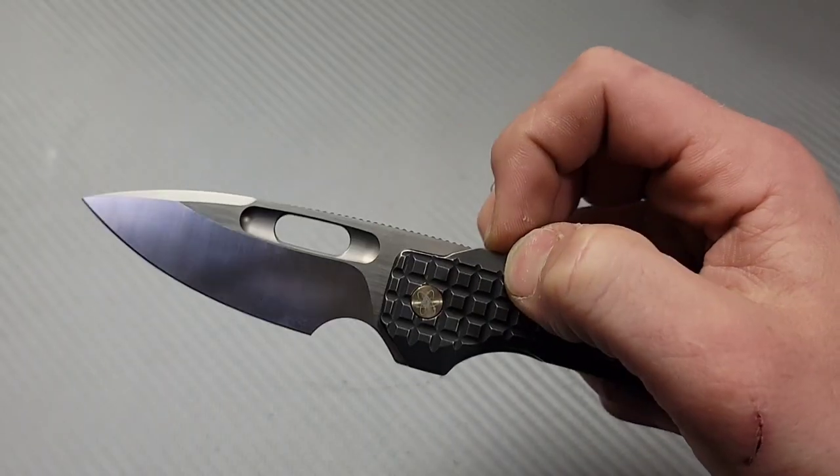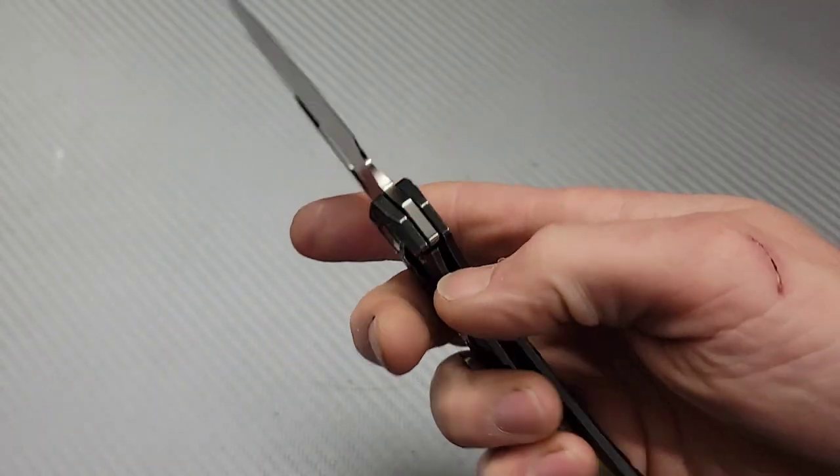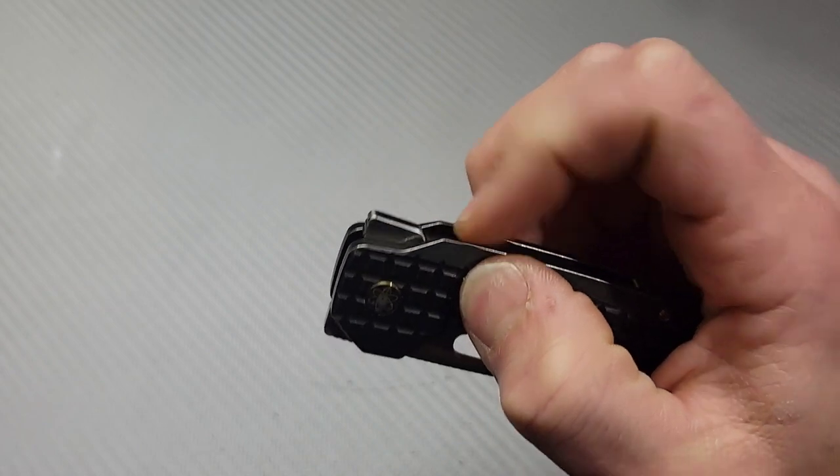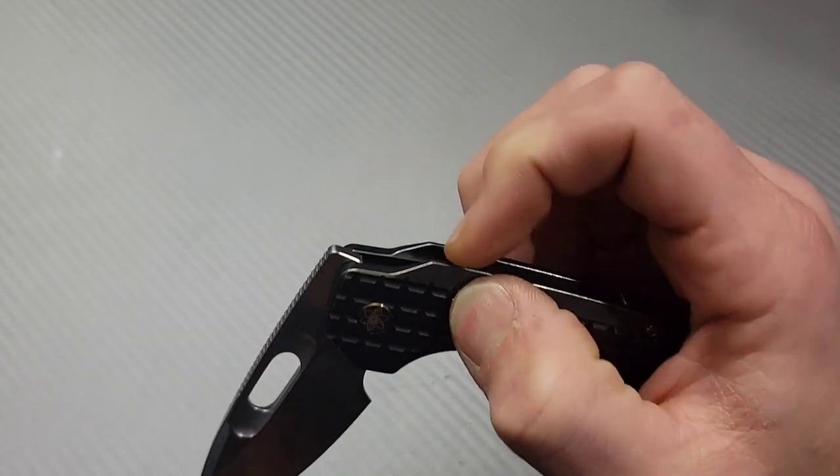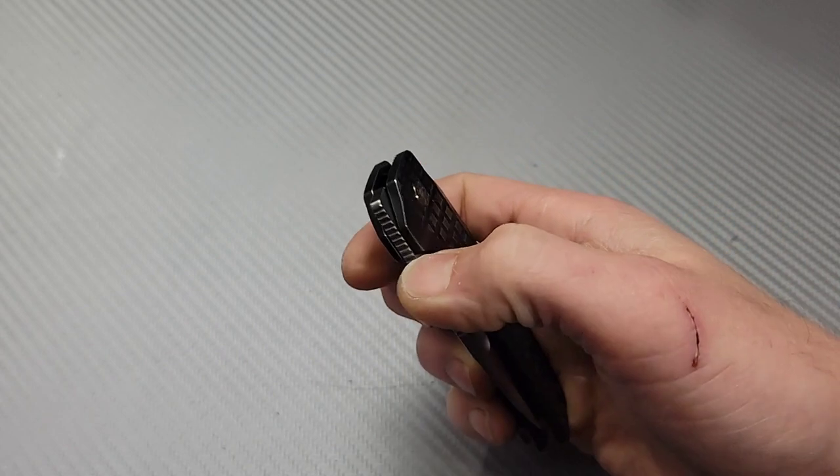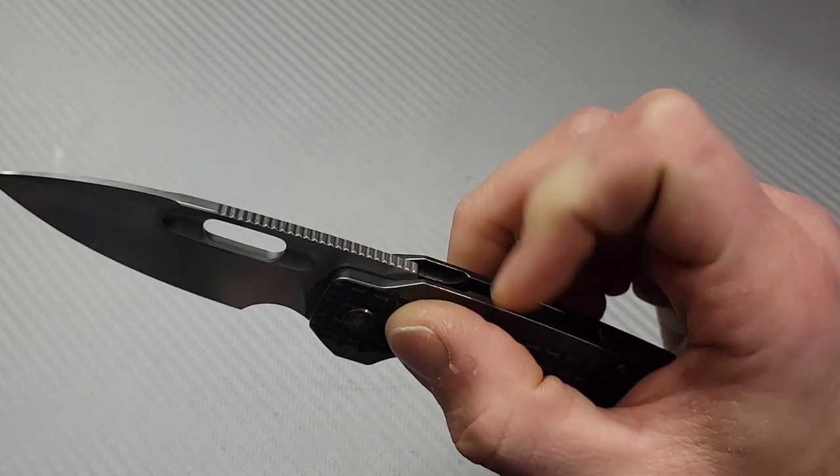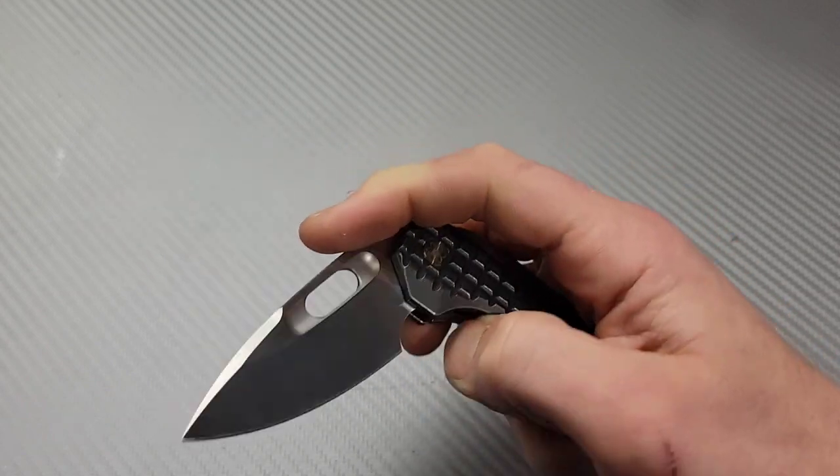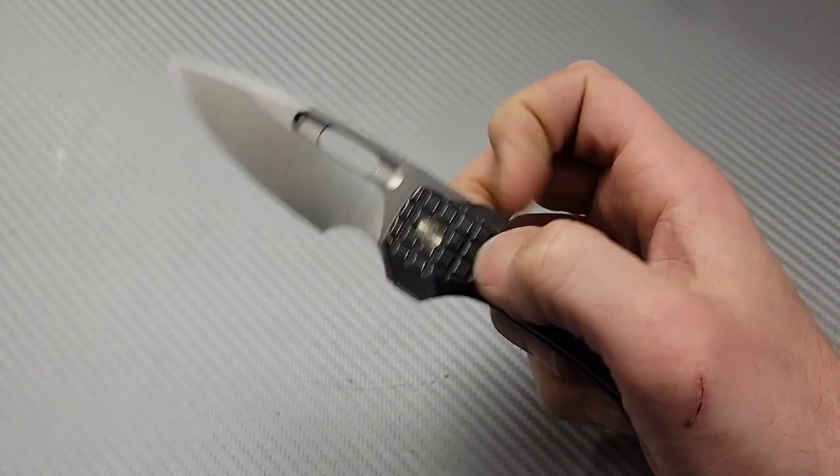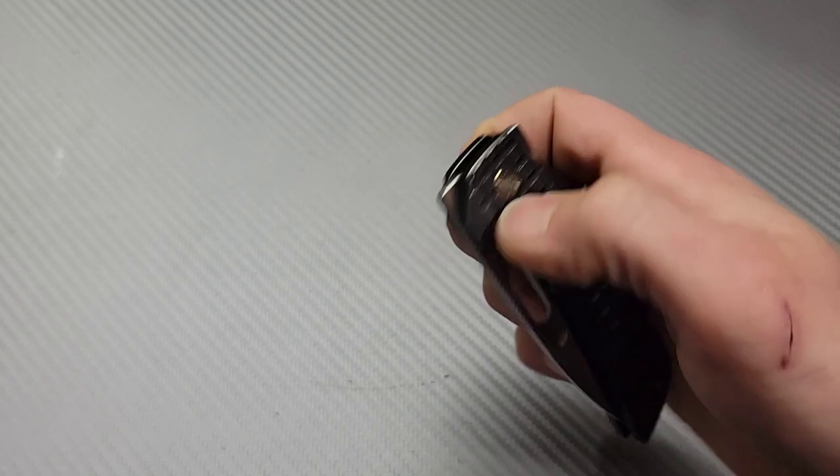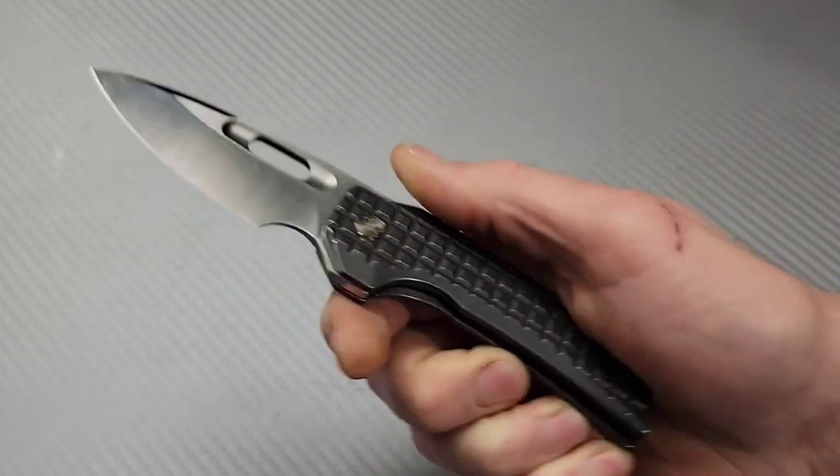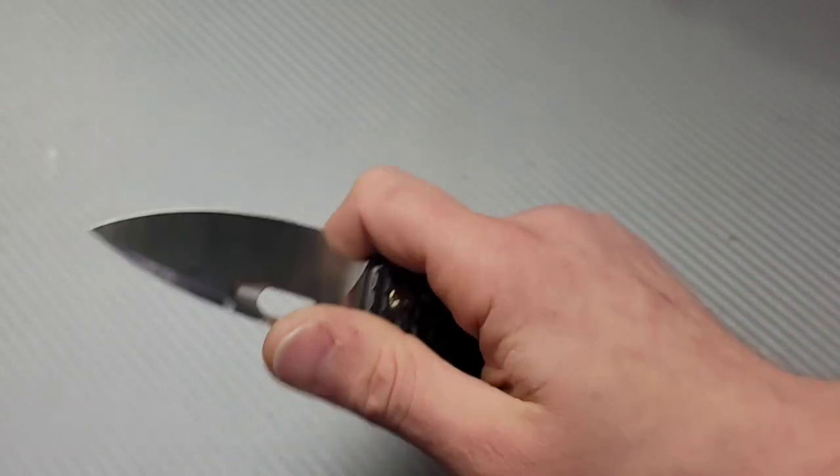Now, another thing I forgot to mention, when you pull down on the flipper tab, you have a very nice landing zone right here. So when you yank down, it is a nice comfortable flip, even though it feels unique because it feels like a square right here. It's still very comfortable when you do deploy it.